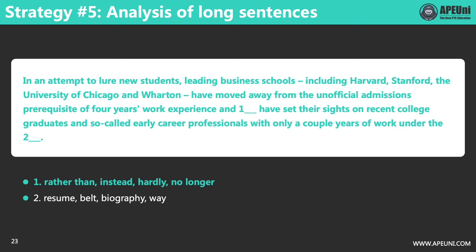Our fifth strategy for FIB-RW is the analysis of long sentences. As you can see, there is only one sentence in this question, and we need to be able to understand this very long sentence to solve the first blank.